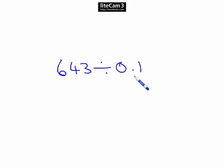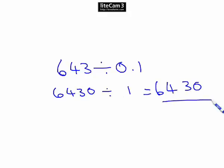OK, the only confusion here is the decimal point. If you had to divide by 1 you'd be OK. So let's make it easy. Let's times them both by 10 and have 6430 divided by 1, which is obviously 6430, which is our answer.